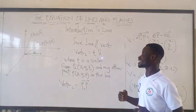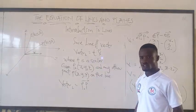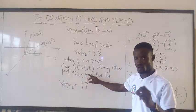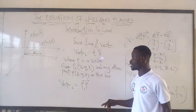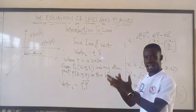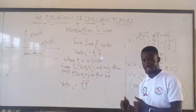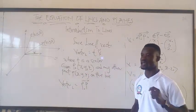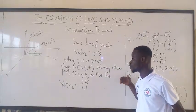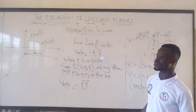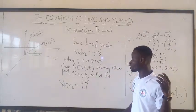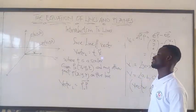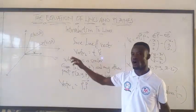So when T is the scalar, we have been given P-naught, which is the specific point — the initial point. Any other point on the line is represented by x, y, and z.